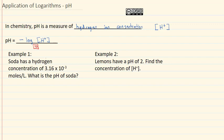Let's take a look at an example where we use pH. Here we're told in example one that soda has a hydrogen concentration of 3.16 times 10 to the negative 3 moles per liter. We need to find the pH of soda.